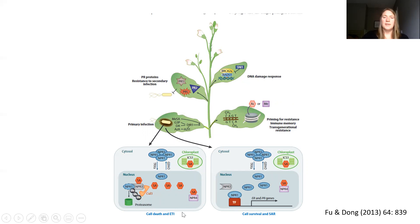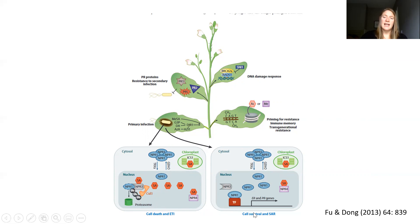Here's a broad overview of what happens in this process. In the primary infection site during HR, part of the lesion produces so much salicylic acid that the receptor NPR1 monomerizes, moves into the nucleus, binds with NPR3, and is degraded, allowing programmed cell death to occur. In sites with a little less salicylic acid accumulation, NPR1 monomerizes and enters the nucleus but is no longer bound by NPR4, so it binds to transcription factors and activates gene expression, generating immune responses at the primary infection site.